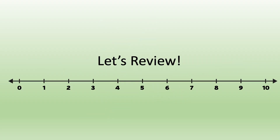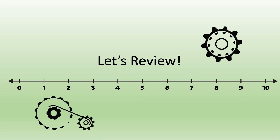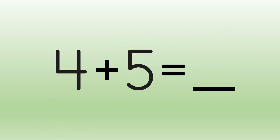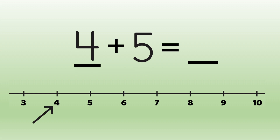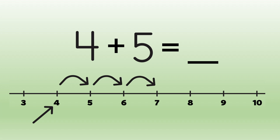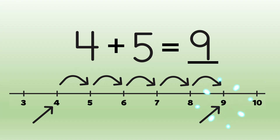So let's review what we've discovered today. A number line is a great tool for helping with addition. We can look at an addition sentence like four plus five equals blank. We find four, the first addend, on the number line. Then look at the second addend — it's five. Count up five from four: one, two, three, four, five. And you get nine. Four plus five equals nine.